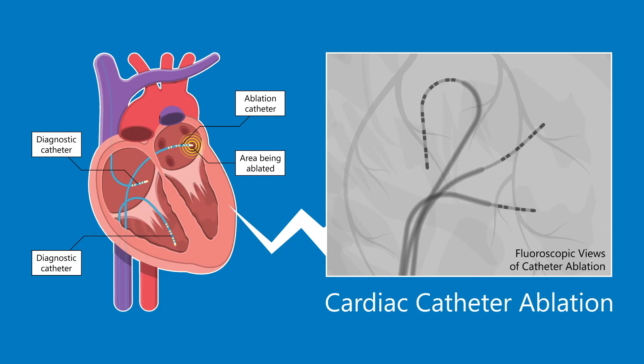RF ablation is the energy by which we ablate — we heat the particular tissue and make it dead so that it does not conduct further in life. There are other modes also. This conventional mode uses fluoroscopy, or x-ray radiation, to see the location. Now with advancement we have two more methods to identify the rhythm without x-ray radiation, which we call 3D ablation.